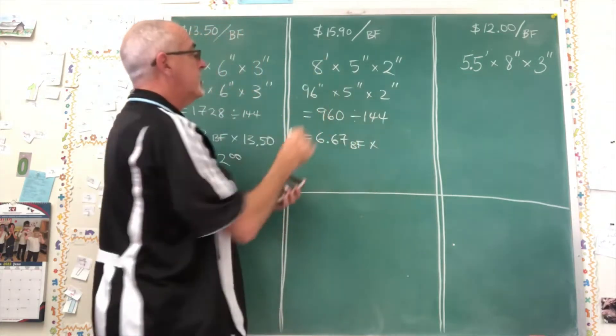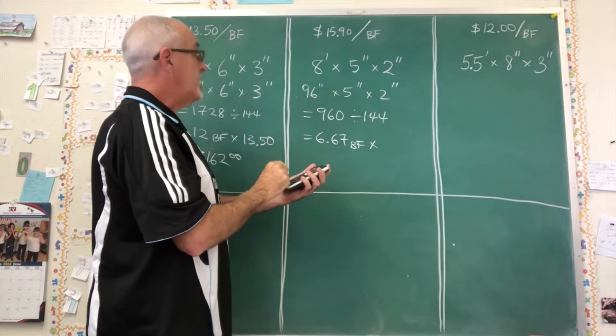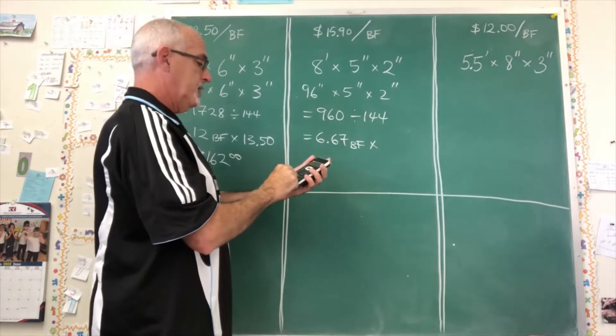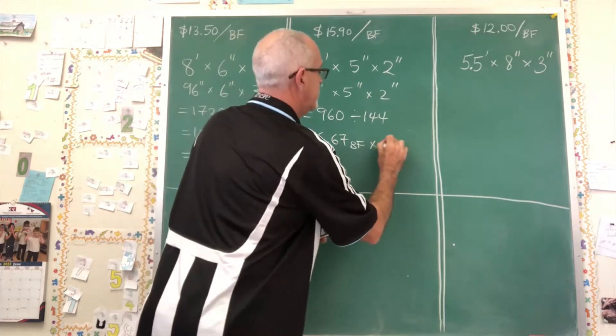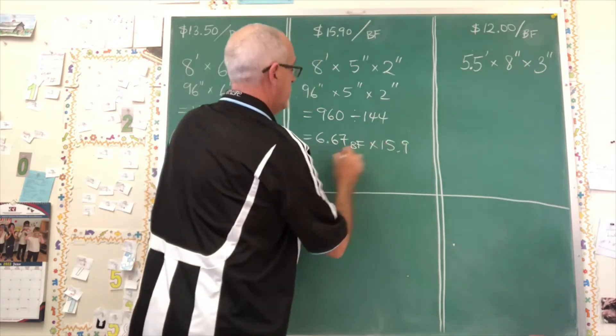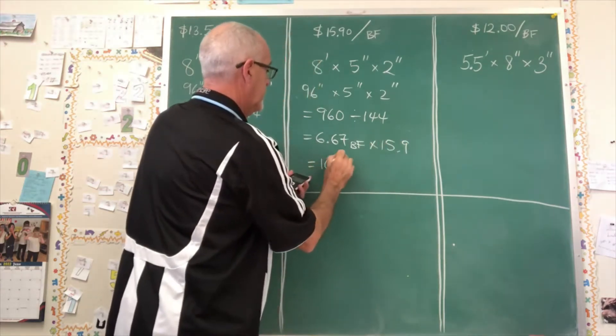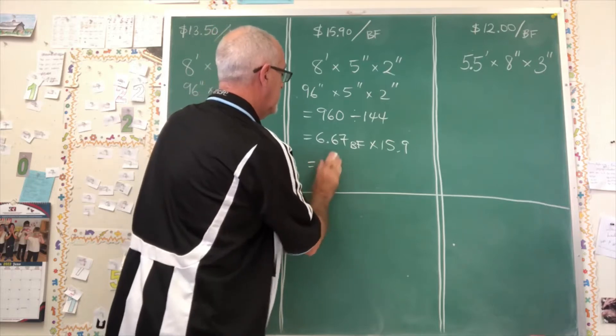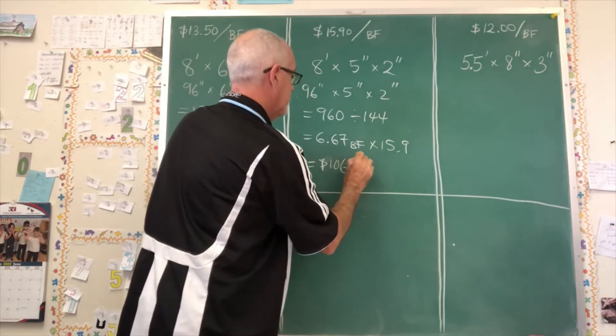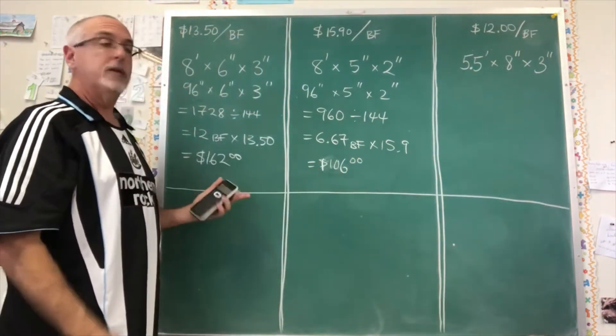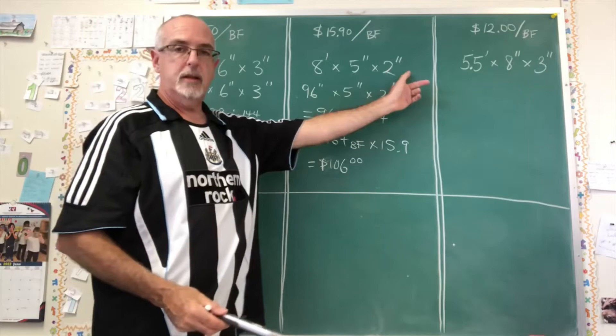And I'm multiplying that by the charge per board foot, times 15.9, and I'm getting $106. Let me tidy that up. So this one not quite as expensive, but it was only two inches thick.